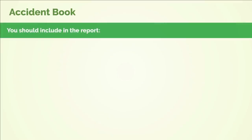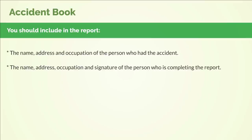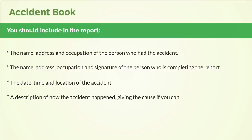You should include in the report: the name, address and occupation of the person who had the accident; the name, address, occupation and signature of the person completing the report; the date, time and location of the accident; a description of how the accident happened, giving the cause if you can; and details of the injury suffered.